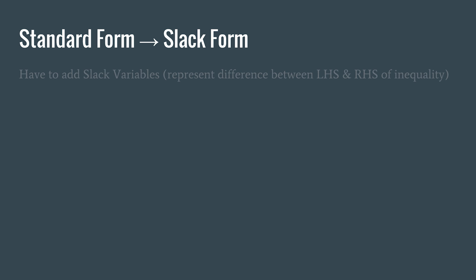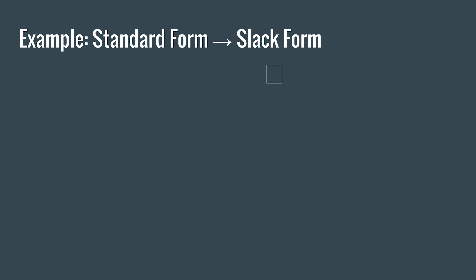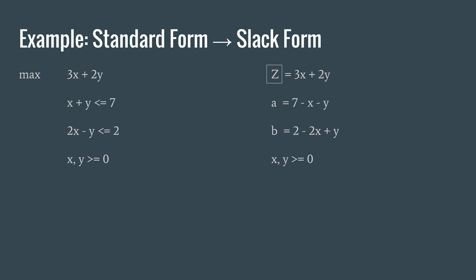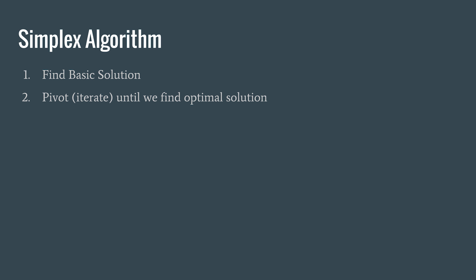Now we're going to convert standard form into slack form. For this, we add slack variables, which represent the difference between the left and right-hand side of an inequality. For each inequality in the form ax plus by is less than or equal to c, we rewrite this as s equals c minus ax plus by, where s is our slack variable. We give our objective function a variable name — in this case z. Variables a and b are our basic variables, and x and y are non-basic variables. z is our objective function variable.